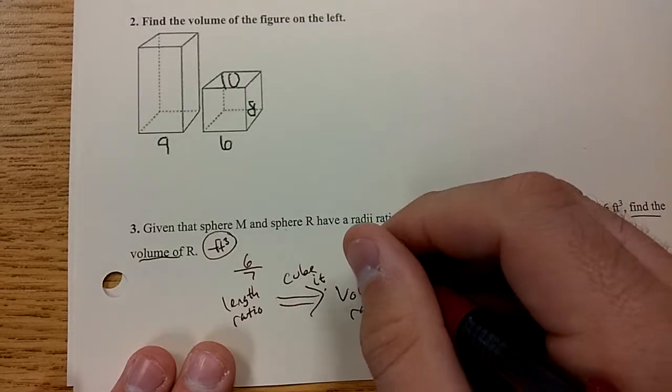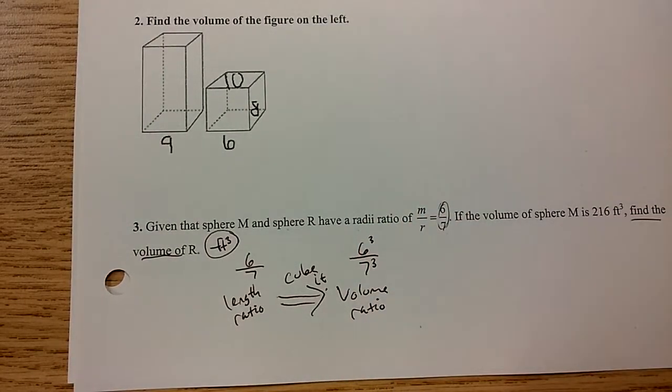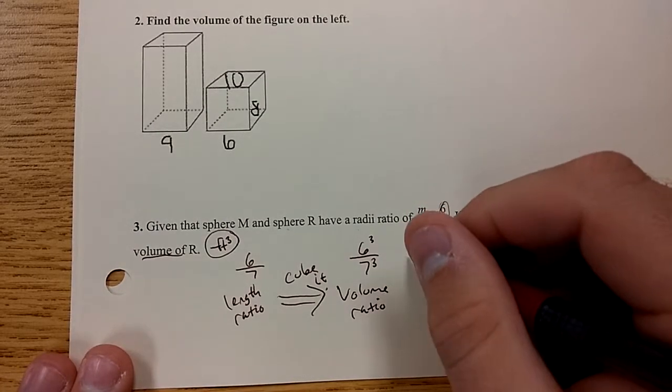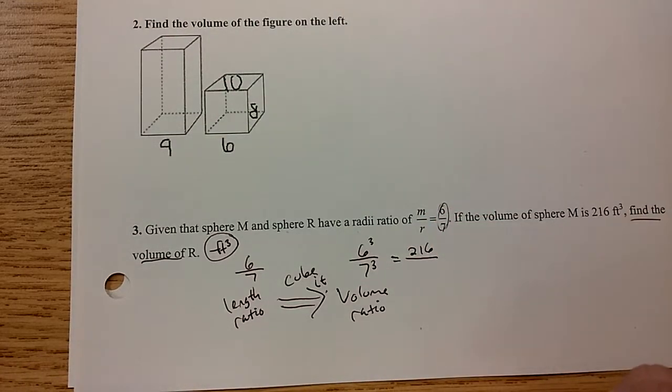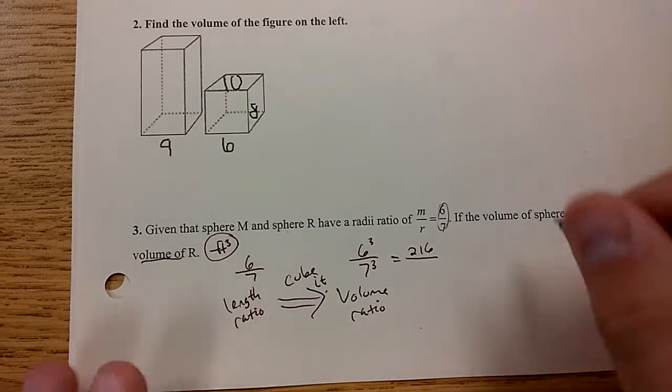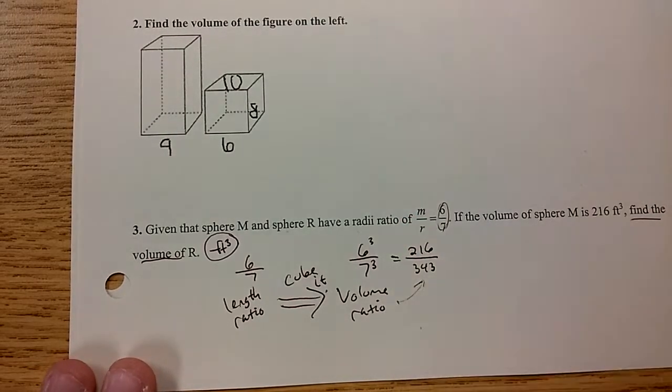That means the power of 3, so 6 cubed over 7 cubed. 6 cubed ends up getting 216. 7 cubed is 343. So this is now your volume ratio.